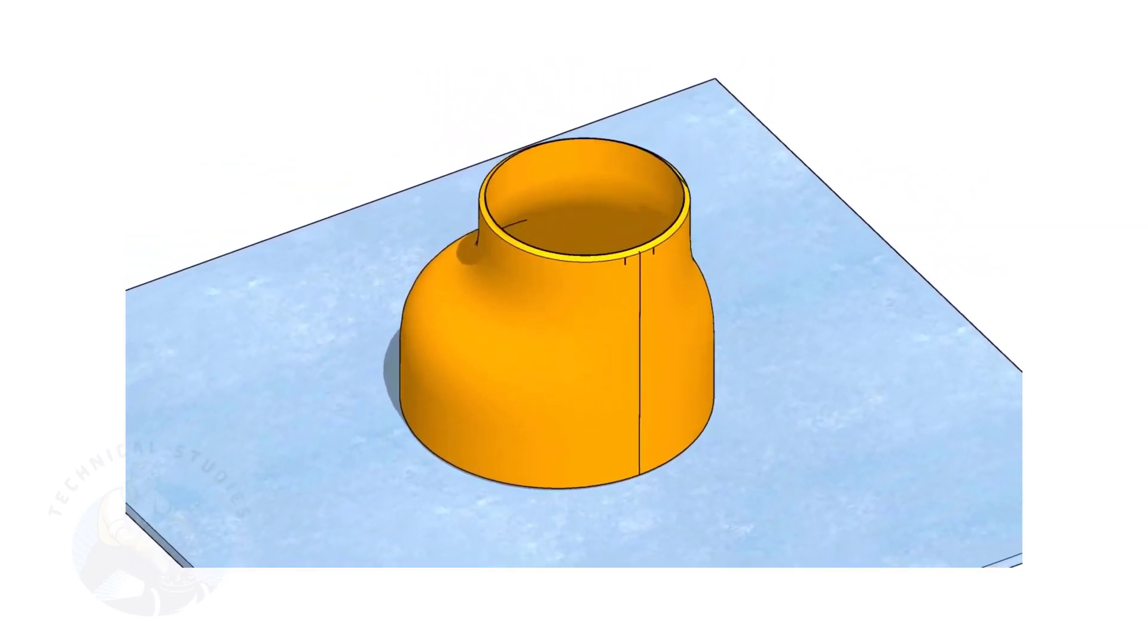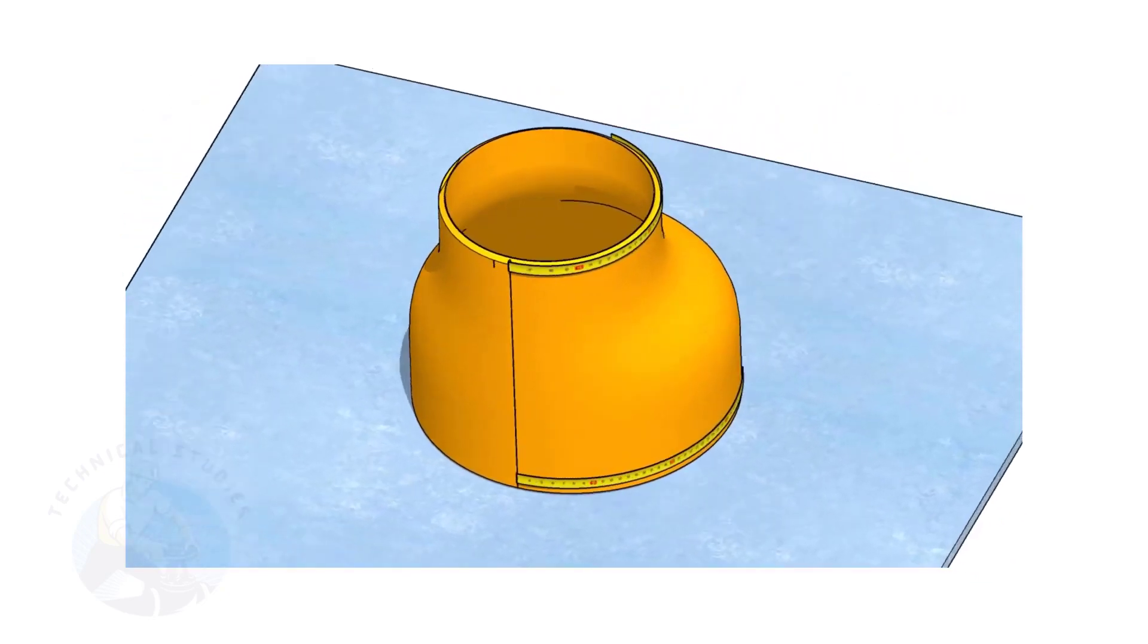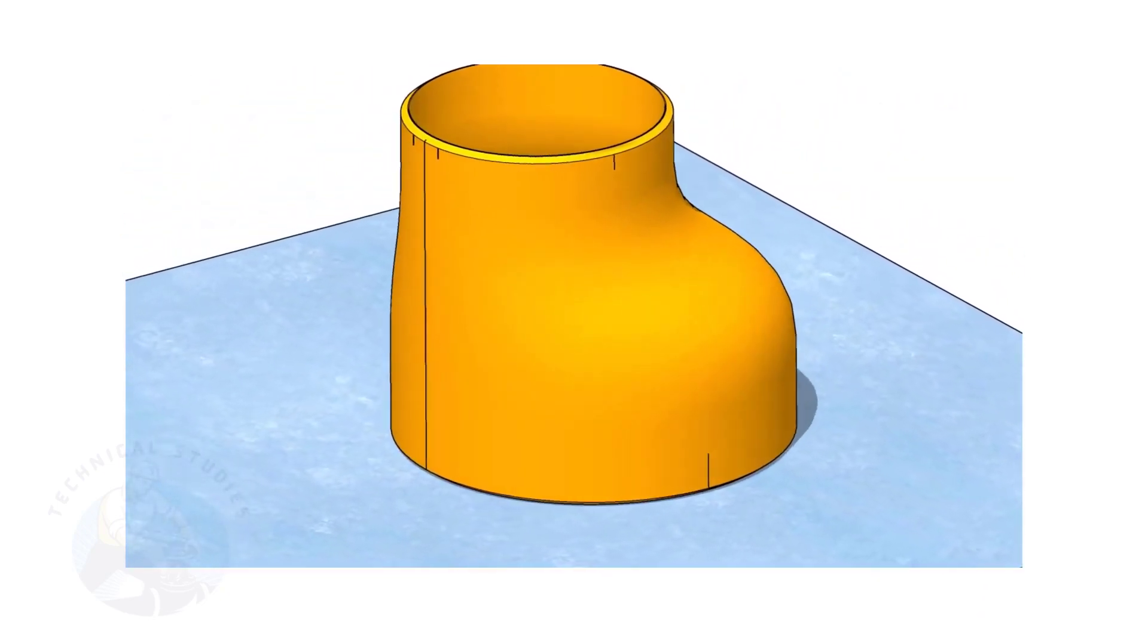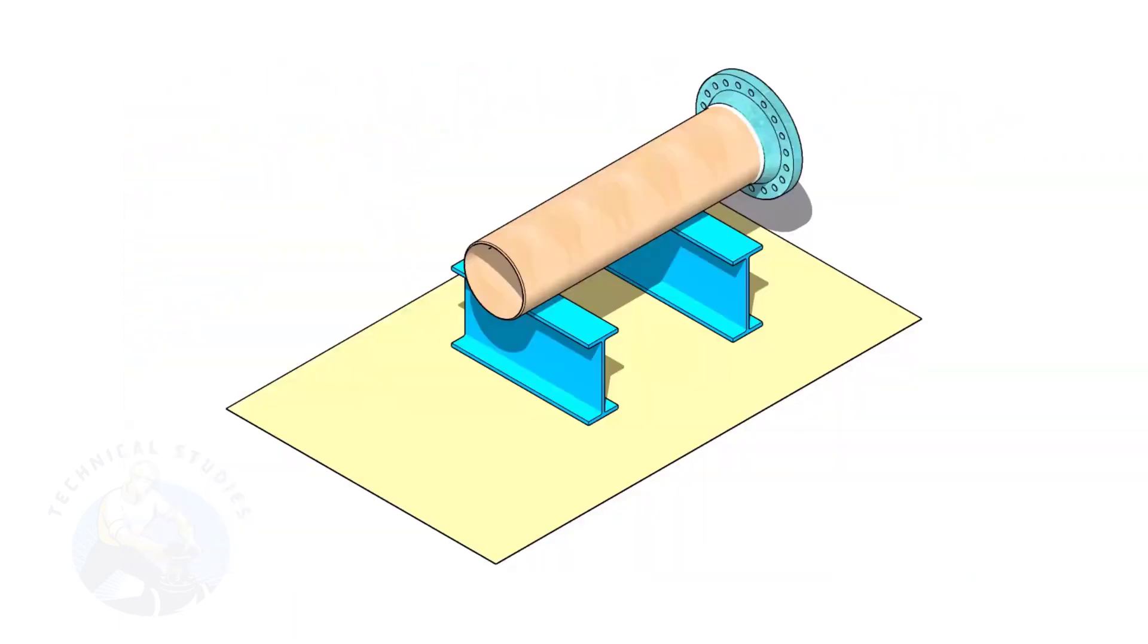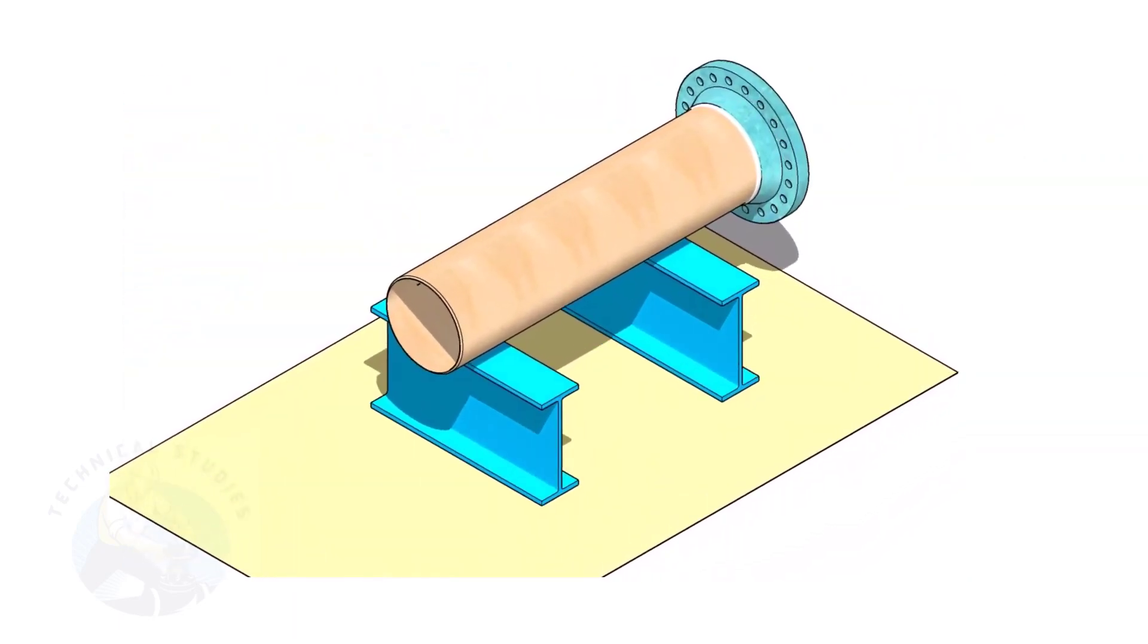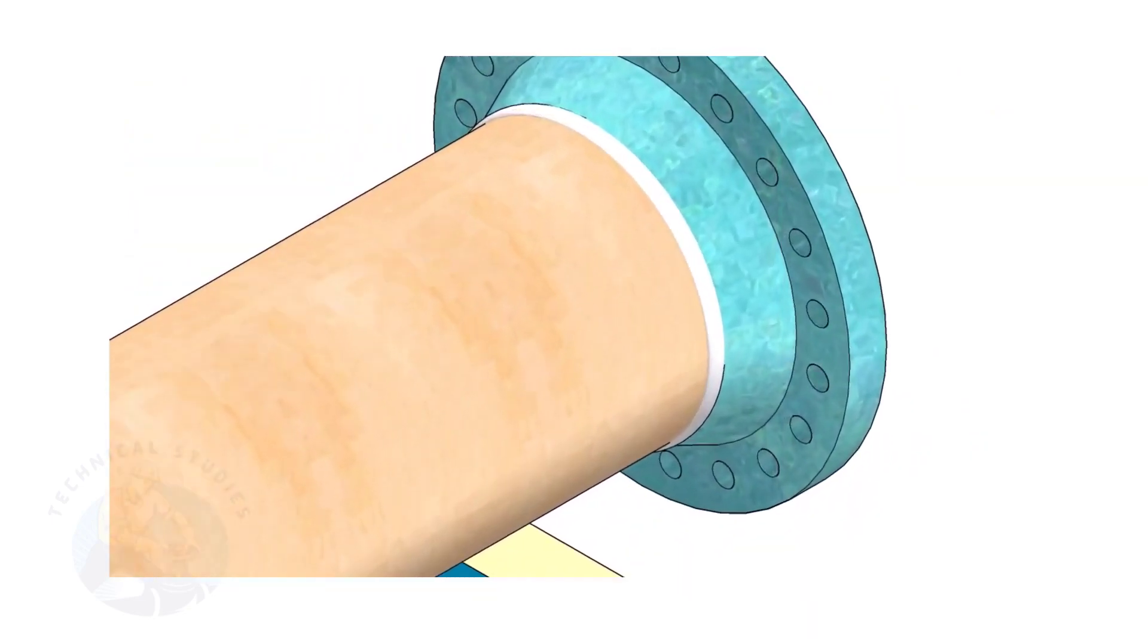But this method is applicable for all the fittings. Remember, the sequence of the fit up is more important. Assume that the flange is welded to the pipe. Put the spool on suitable supports.